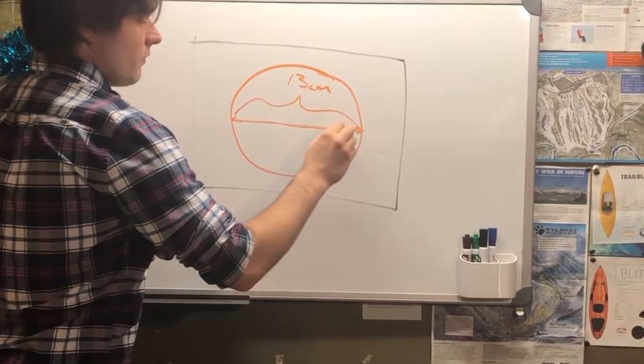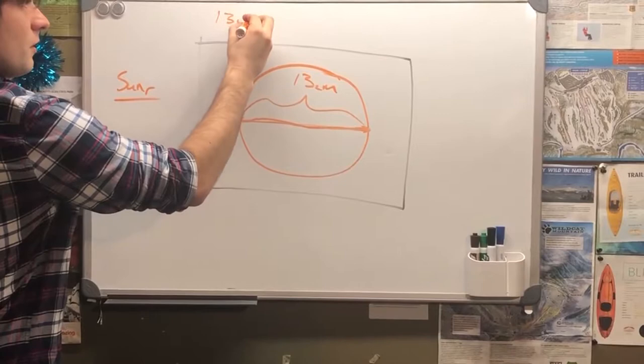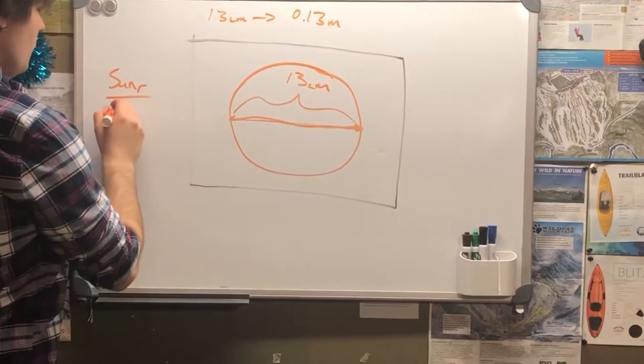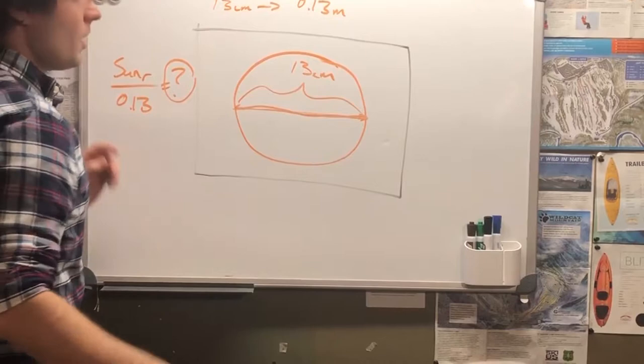Whatever that number is, that's going to be how many solar units are on your screen. Now, what you want to do is once you have that number, you want to pick your object.